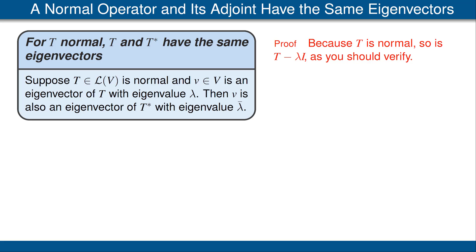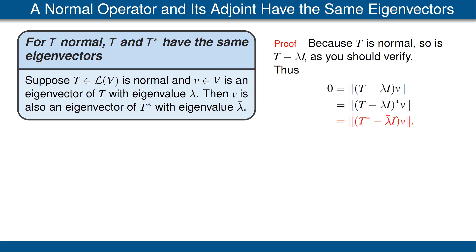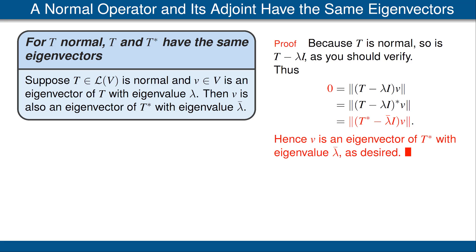Let's look at the proof. We assume T is normal, so T − λI is also normal, as you should verify. Now, ‖(T − λI)v‖ = 0 because v is an eigenvector of T with eigenvalue λ, so T(v) = λv. We use the hypothesis that T − λI is normal: for normal operators, the adjoint applied to a vector gives the same norm as the original operator applied to the vector. The adjoint of T − λI equals T* − λ̄I, so ‖(T* − λ̄I)v‖ = 0, meaning T*(v) = λ̄v. Thus v is an eigenvector of T* with eigenvalue λ̄. This completes the proof.